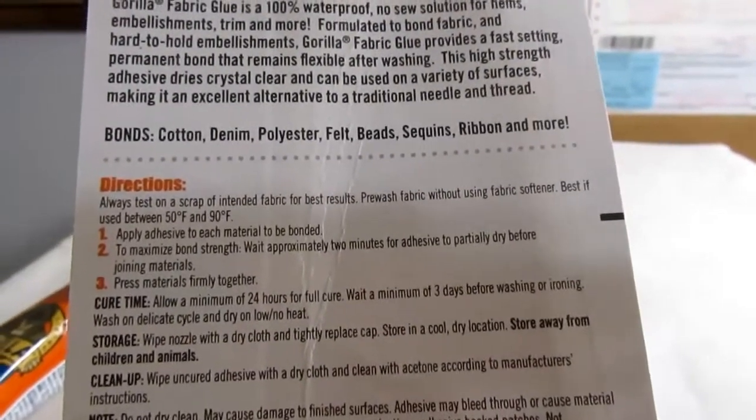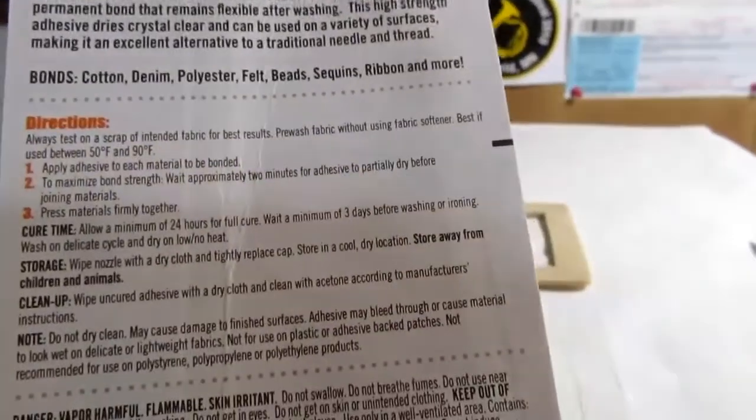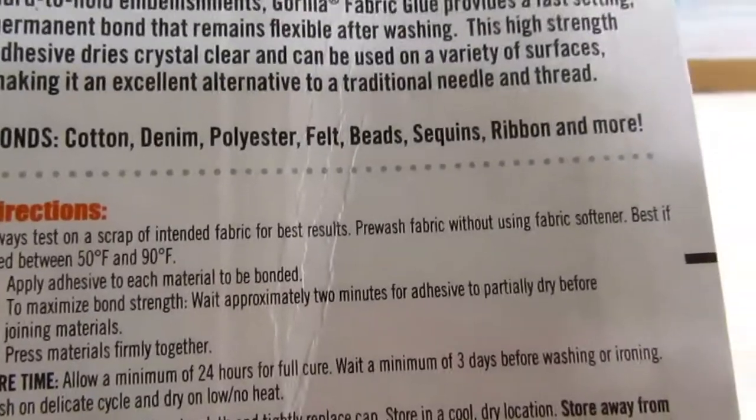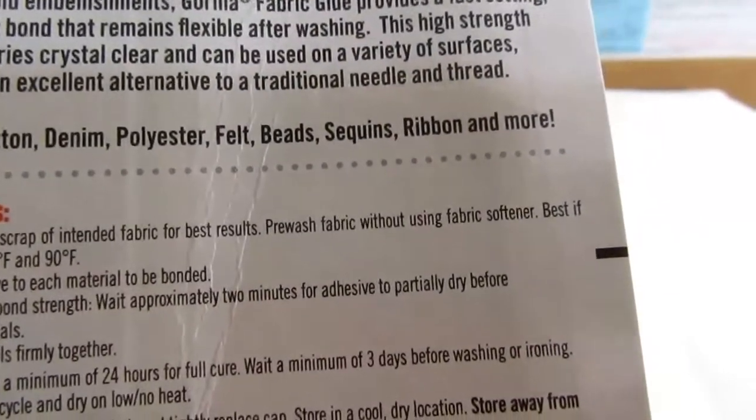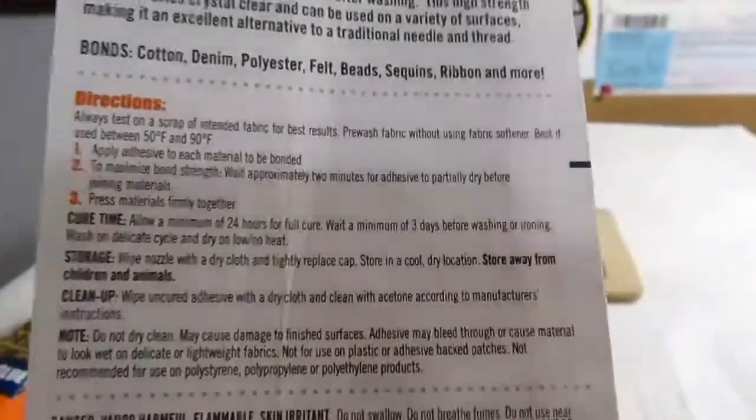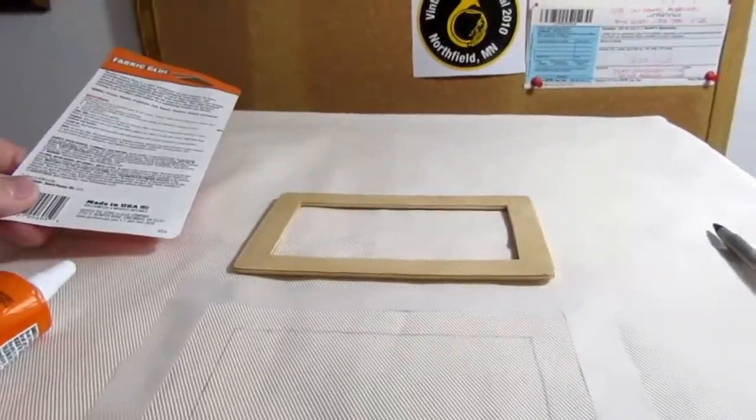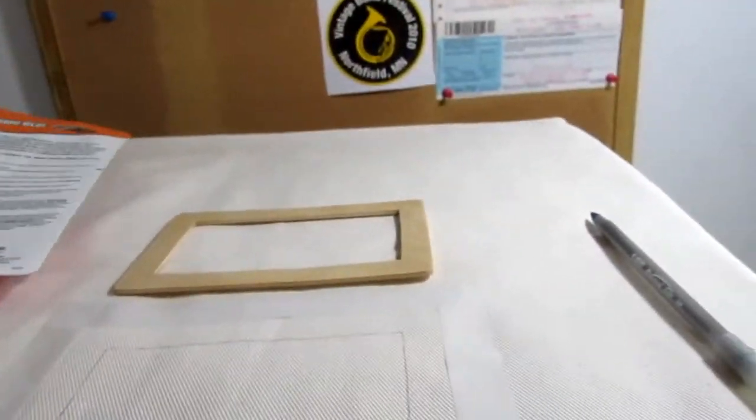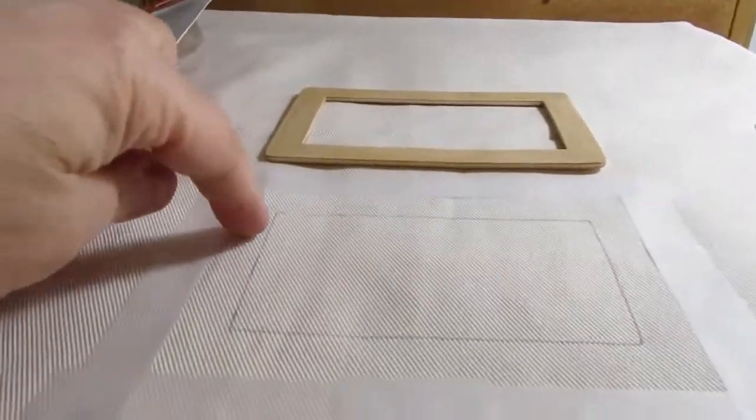It's supposed to be flexible after drying, dry very quickly, have very good grip, and dry crystal clear. It's good for cotton, denim, polyester, felt, beads, sequins, ribbon and more. Wood is on the more detailed list of applications. They say to put adhesive on each material to be bonded, not just one.